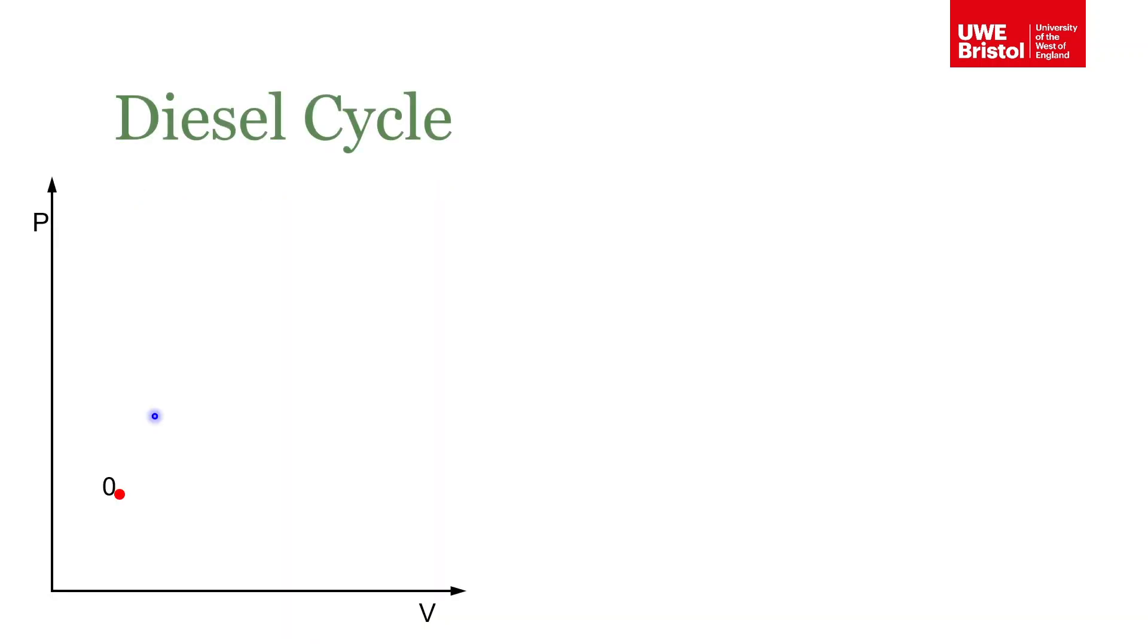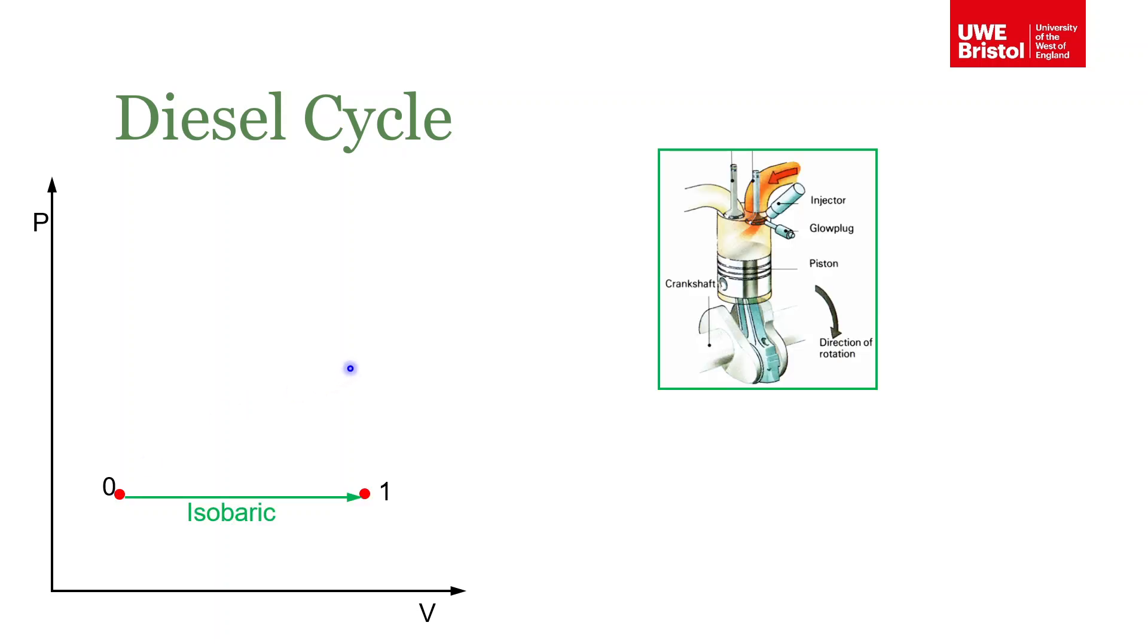As with the Otto cycle, I'm starting with a blank PV plot - pressure volume plot - and we're starting at state zero in the bottom left hand corner with the piston at top dead center and low pressure. The first stroke is induction, so the piston moves down.